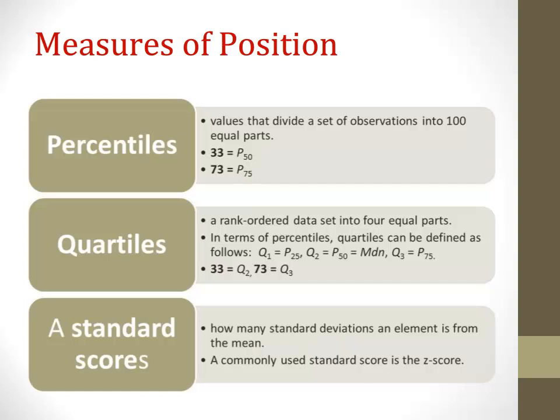Now that we have an understanding of percentiles, let's move on to quartiles. Quartiles rank-order the data into four equal parts. The values that divide each part are called the first, second, and third quartile, denoted by Q1, Q2, and Q3 respectively.